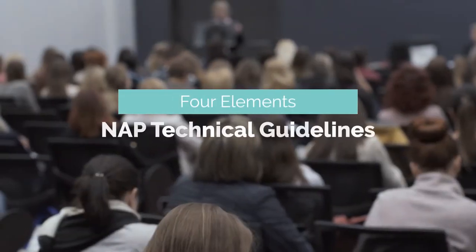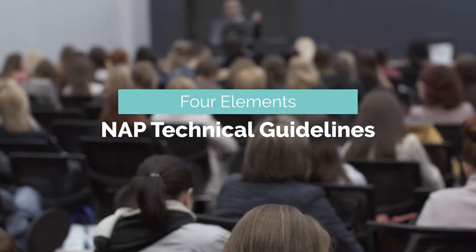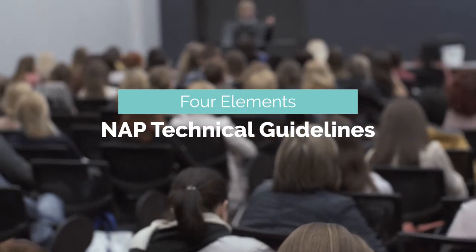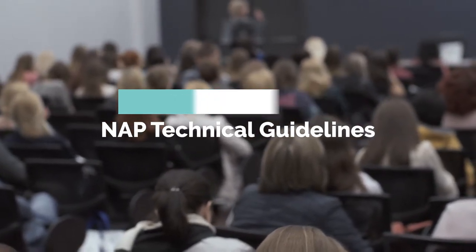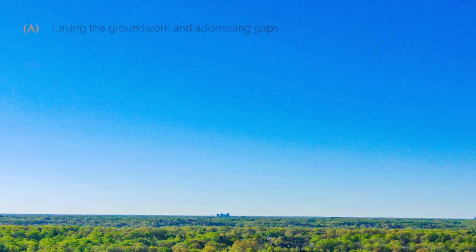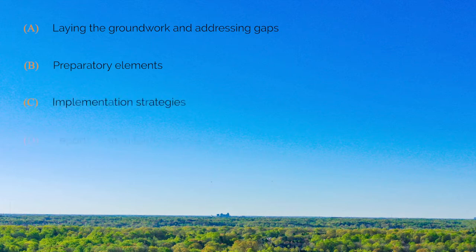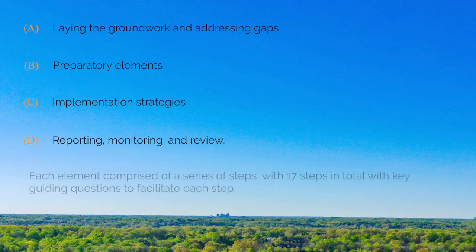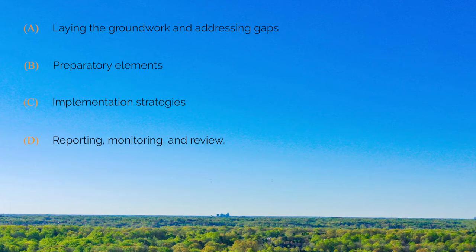The NAP technical guidelines identify four elements required for the formulation and implementation of national adaptation plans. These include laying the groundwork and addressing gaps, preparatory elements, implementation strategies, and reporting, monitoring, and review. Each element is comprised of a series of steps with 17 steps in total and key guiding questions to facilitate each step. We will look at each of these elements and later see how the S8 Downscaler can support the related processes.